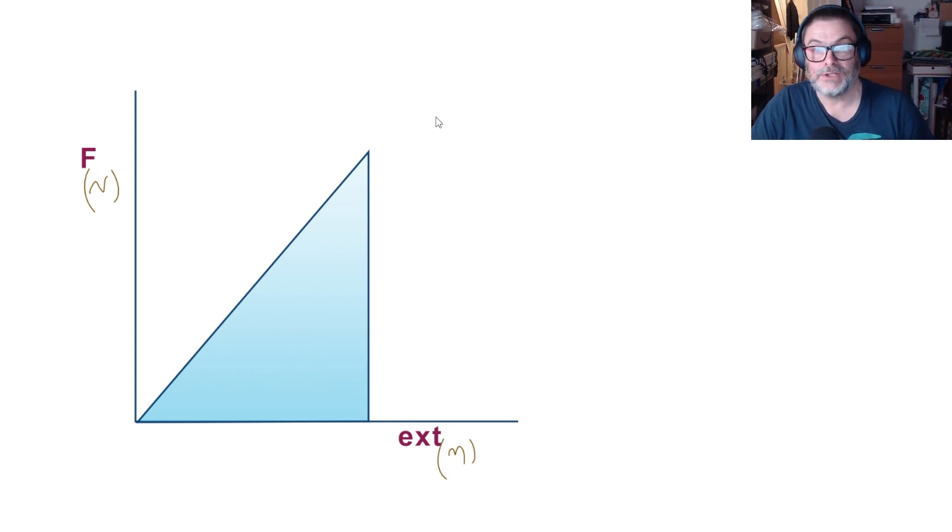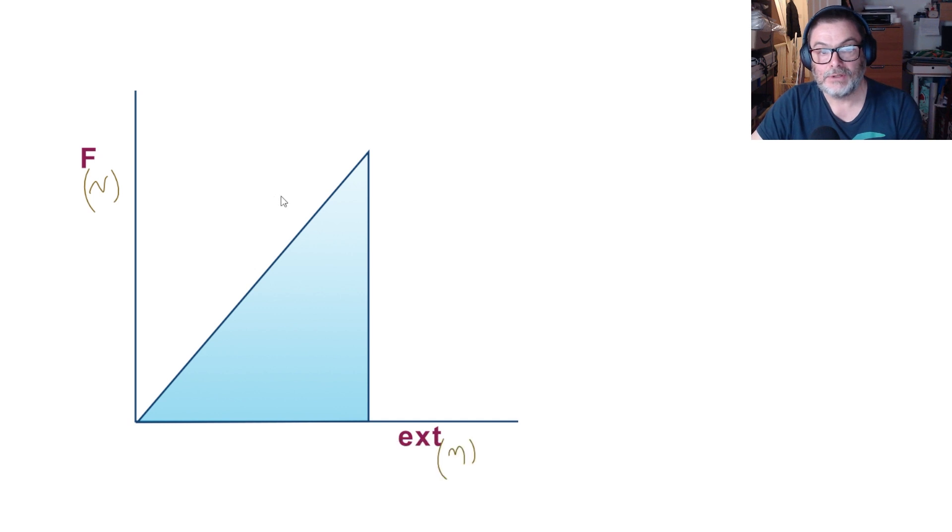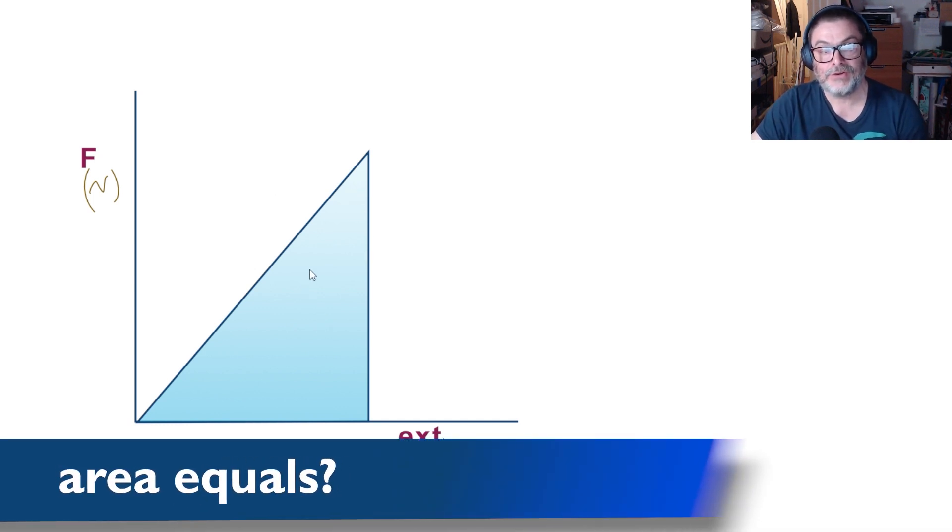Now for every graph you ever see in physics there are two things you can ask yourself. One is does the gradient mean anything and the other is does the area under the graph mean anything?